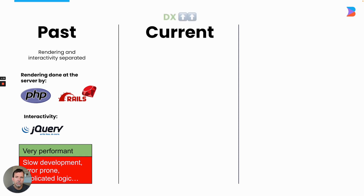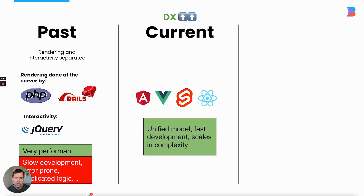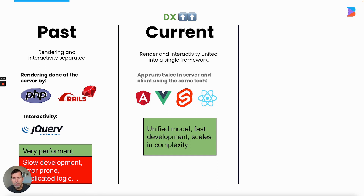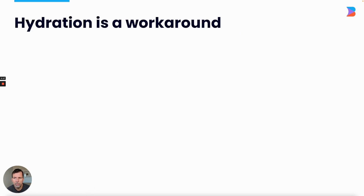Currently, the technology we use is really focused on development experience. The most popular frameworks — whether it's Angular, Vue, React, or many others that exist today — kind of work the same exact way. What they do is give us a really unified model and really fast development that scales in complexity. The value add is that there is just one language that we have to worry about. But the problem is that the application ends up running twice, and because of that, they all essentially use hydration, and as a result, they don't have the best startup performance.